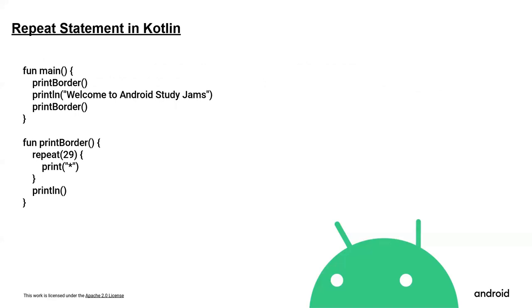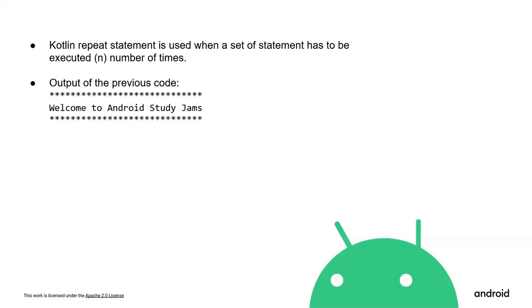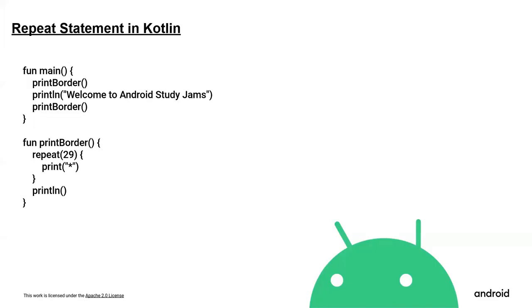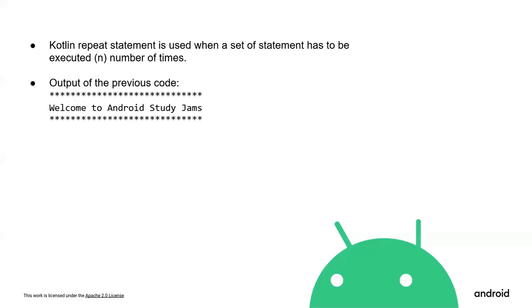Coming to the repeat statement in Kotlin. There is a main function where first the print border function is called, then we print 'Welcome to Android Study Jams', and again call the print border function. After the main function, we define the print border function where we use a repeat statement that prints a star 29 times. The output will be 29 stars, then 'Welcome to Android Study Jams', then 29 stars again. The Kotlin repeat statement is used when a set of statements has to be executed n number of times.